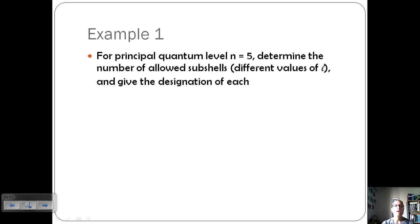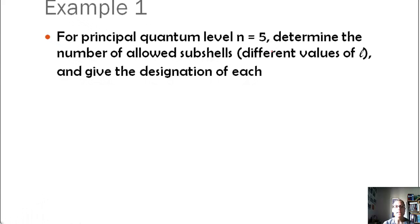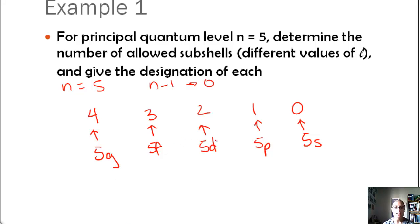Let's take a look at an example. For principal quantum level n equals 5, determine the number of allowed subshells, or different values of l, and give the designation of each. If n equals 5, we know that l is equal to n minus 1 to 0. So that means that l can be 4, 3, 2, or 1, or 0. We know that l equals 0 represents s, so this is the 5s, 5 representing that n value. 1 is 5p, 2 represents 5d, 3 represents 5f, and because we have a 4 here, we can go to 5g. And so then each of these subshells has those different shapes, and we're going to look at those in a second.